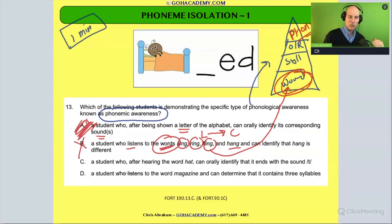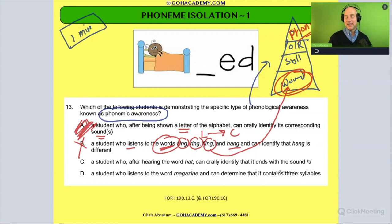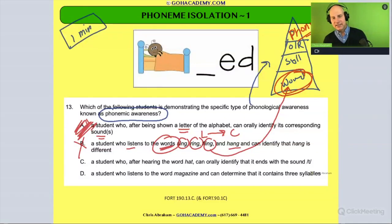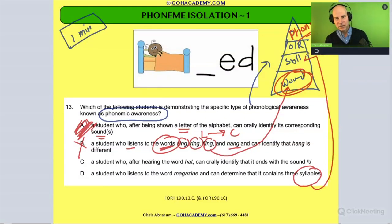Answer D describes a student who listens to the word 'magazine' and can determine that it contains three syllables. That is definitely a syllable-level activity.